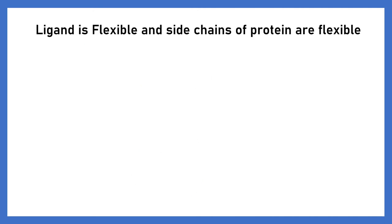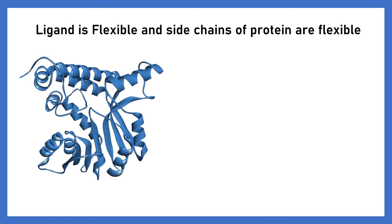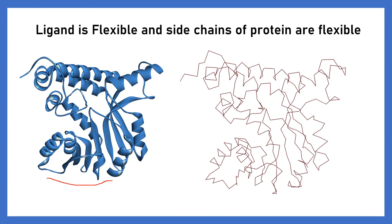The next type is where the ligand is flexible and the side chains of the protein are also flexible. We are considering both ligand flexibility and side chain flexibility. Consider a protein with some 400 amino acids — when we take the backbone of this protein it becomes very huge. The number of conformations it can take becomes very computationally expensive. That's why we cannot consider full protein flexibility.